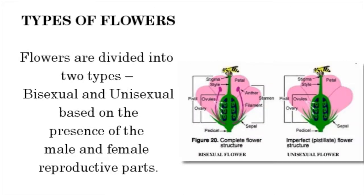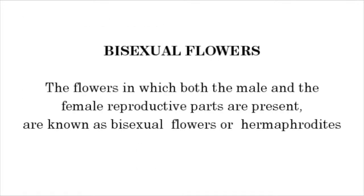Types of flowers. Flowers are divided into two types — Bisexual and Unisexual — based on the presence of the male and female reproductive parts. Bisexual flowers: the flowers in which both the male and the female reproductive parts are present are known as Bisexual flowers, or Hermaphrodites.